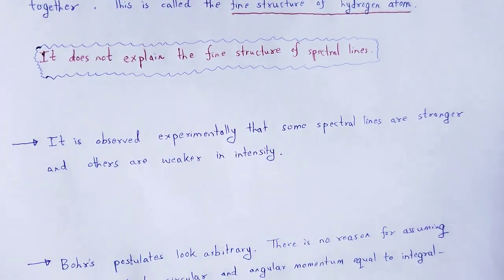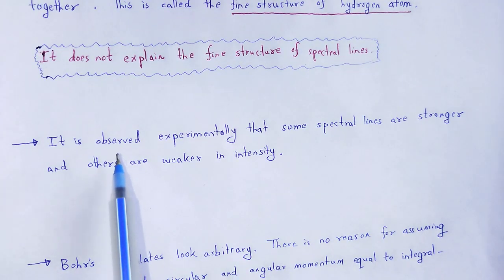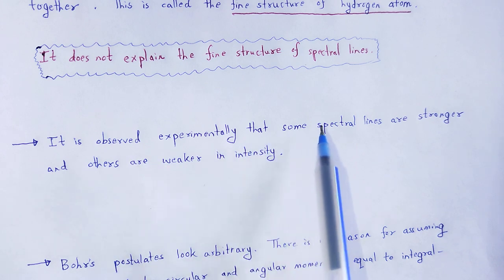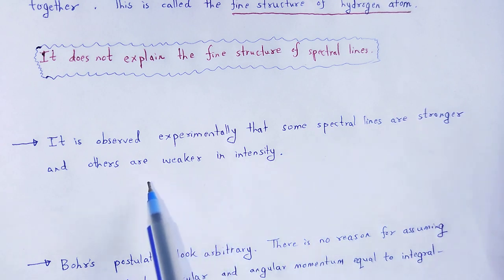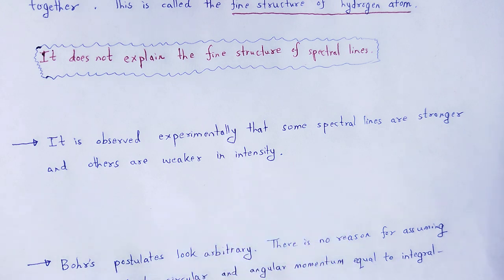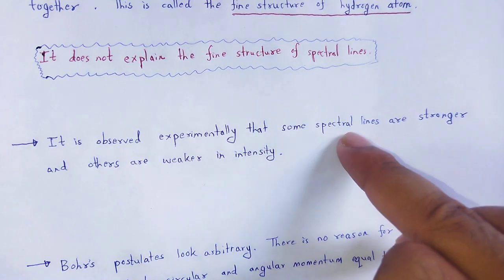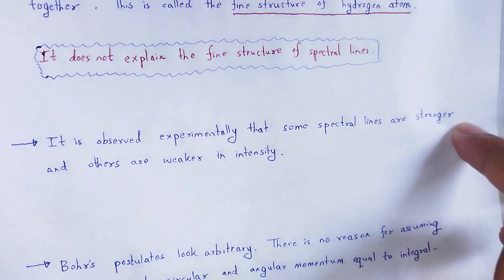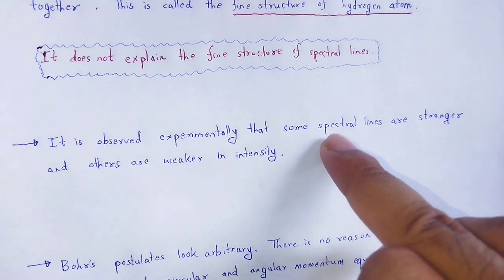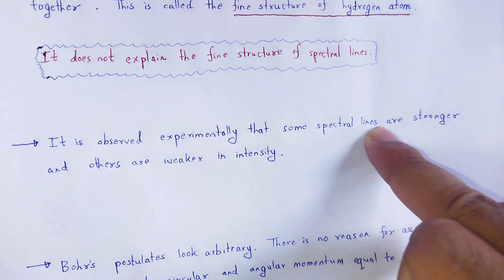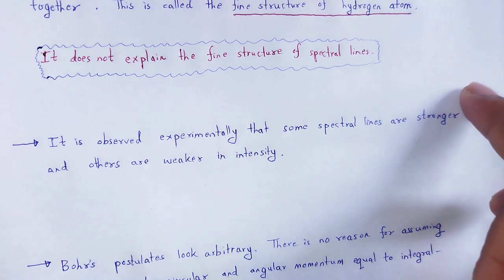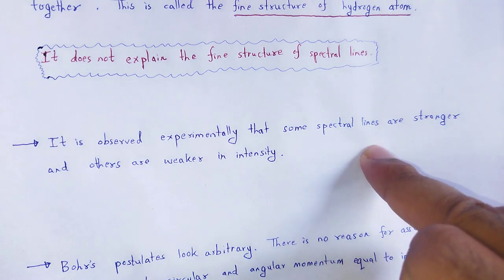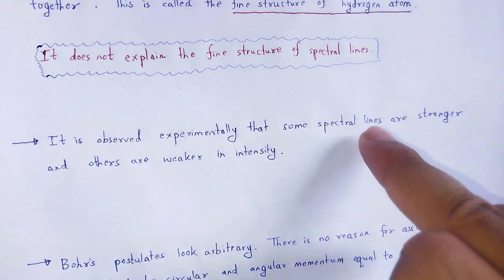Next drawback: it is observed experimentally that some spectral lines are stronger and others are weaker in intensity. When we consider spectral lines under a magnetic field or electric field, we notice that in case of a strong electric or magnetic field the spectral lines are split. In case of a weak electric and magnetic field, they are again split, and that splitting depends upon the intensity.